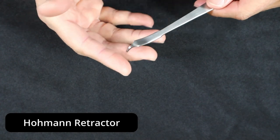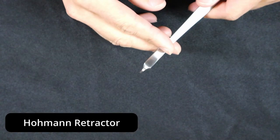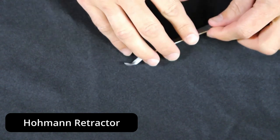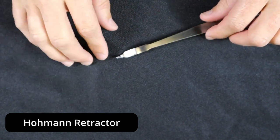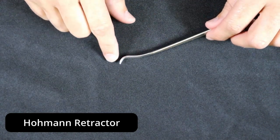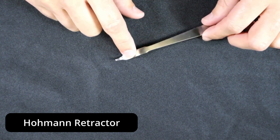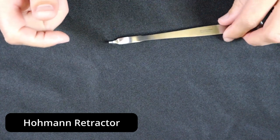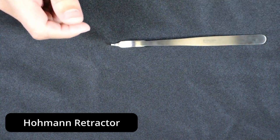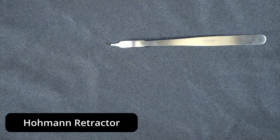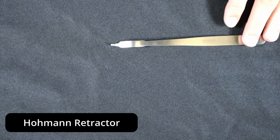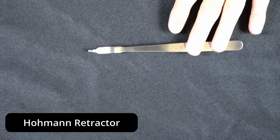You do want to be aware that all instruments need to be in working condition. If you see a Hohmann come back that's clearly bent out of its original profile, or there's a chip or divot that's making it difficult to clean, that device needs to be taken out of service and either repaired or replaced by the instrument provider.